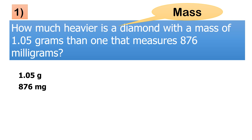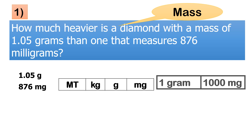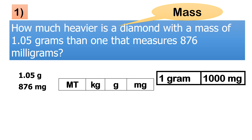So, ang mas madali, convert natin yung 1.05 gram into milligrams. So, using the conversion table in mass — kilogram, gram, and milligram — we all know that 1 gram is equivalent to 1,000 milligrams. So, yung gram is bigger than milligram. Kapag i-convert natin yung gram to milligram, we just move the decimal place from left to right. So, ang given natin dyan is 1.05 gram, i-move natin yung decimal nung number to the right three times, because 1 gram is equal to 1,000 milligrams — there are three zeros.